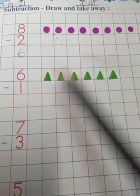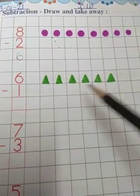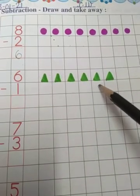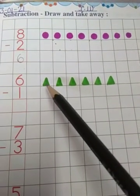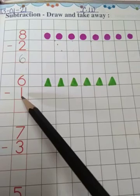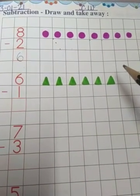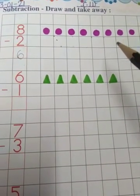6 triangles are here. And you have to take away 1 triangle out of these 6 triangles. You have to remove one triangle. Take away means remove.